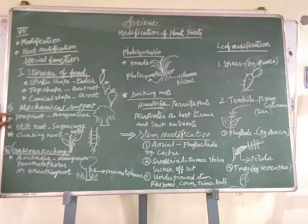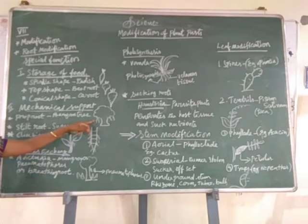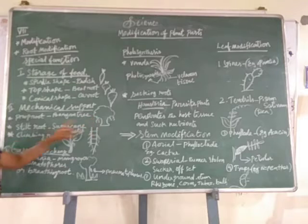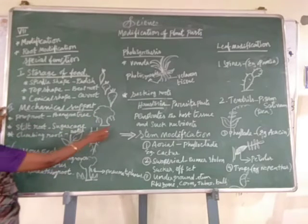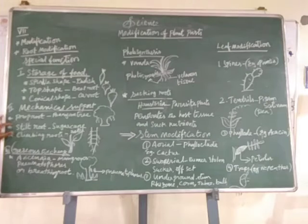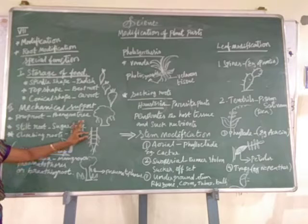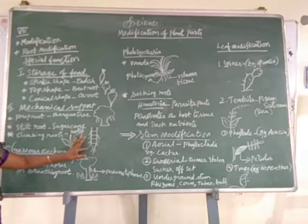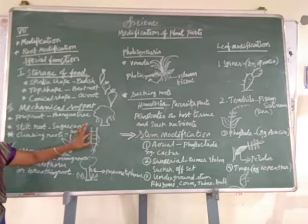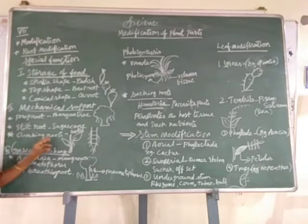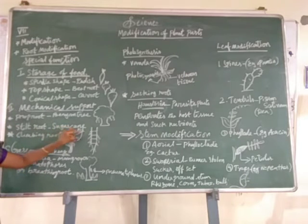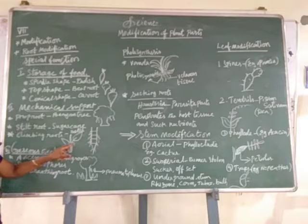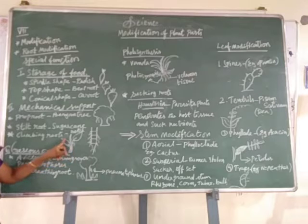Next, mechanical support. Prop roots — example for banyan tree, where adventitious roots arise from the lateral branches, providing mechanical support. Then stilt roots — example for sugarcane and maize, where adventitious roots arise from the node and internode, giving additional support. Then climbing roots — example for betel and black pepper, where roots arise from the nodes and are used for climbing.